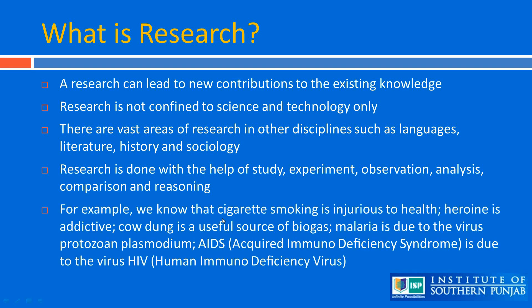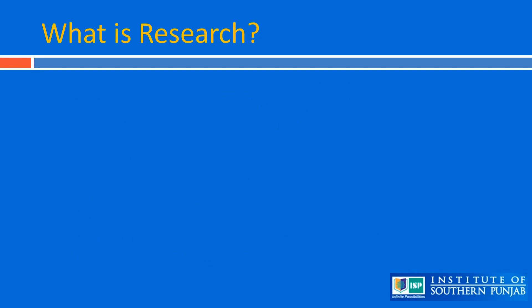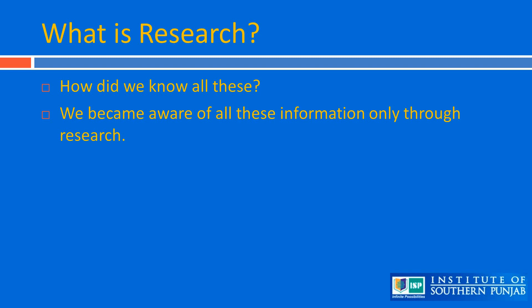For example, we know that cigarette smoking is injurious to health, heroin is addictive, cow dung is a useful source of biogas, malaria is due to the protozoan Plasmodium, AIDS is due to the virus HIV, and so on. How did we know all these? We became aware of all this information only through research.